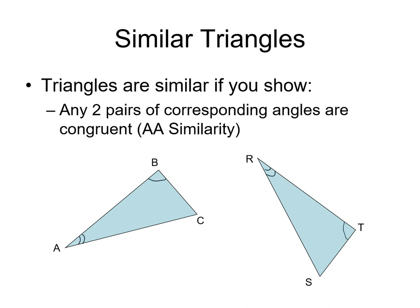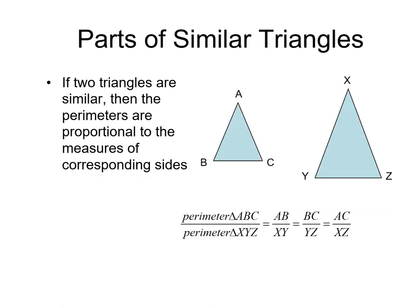The third one is AA similarity, where two pairs of corresponding angles are congruent. That would be enough to state that the two triangles are similar.